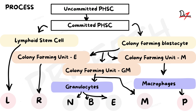To understand uncommitted, think of it like being in the early stages of a relationship — you don't know yet whether you're going ahead seriously. You are uncommitted. But once you are sure, you become committed. Similarly, once these cells are designated to form a particular type of cell, the uncommitted PHSCs become committed PHSCs. There are two types of committed PHSC: the lymphoid stem cell and the colony forming blastocyst.